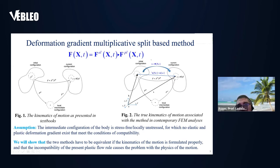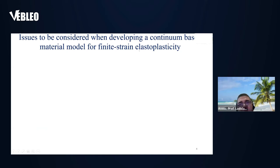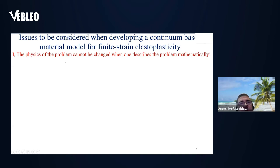Next I'm going to outline the topics I'll deal with. To develop a continuum material model for finite strain elastoplasticity is a difficult problem, because first you have to describe the physics of the problem in such a way that you cannot change the physics of the problem.